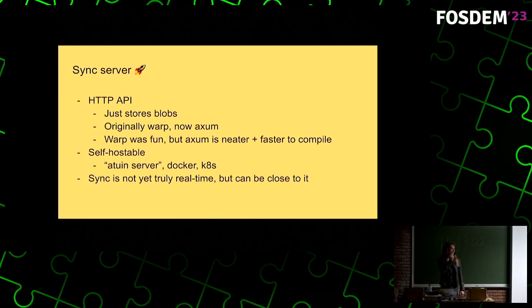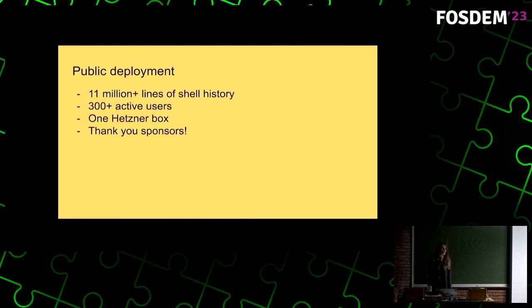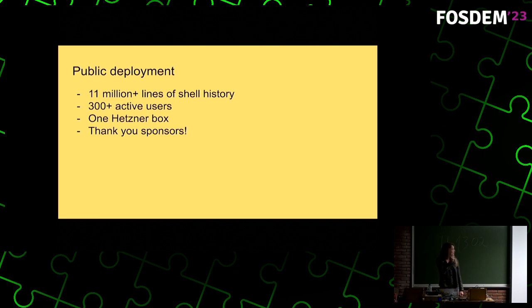The sync is not quite real time yet. It currently syncs at an interval of 15 minutes. You can reduce this down to zero, which basically means it will sync after every single command. If you don't fancy running your own infrastructure, there's a public deployment of Atuin that I run. Currently it's got about 11 million lines of shell history on it with about 300 active users, and it's all running on just one dedicated Hetzner box. It handles way more requests than I thought it ever would. I'd also like to thank the GitHub sponsors, which cover the server bills entirely now — a really nice feeling.